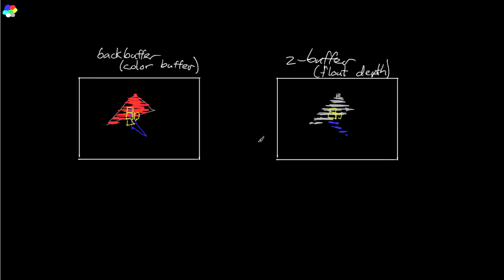That's all there is to it. You use the interpolated Z value to update an array of the depth for each pixel, and use that as a mask to decide whether a pixel will be drawn. This is a special kind of sorting — with drawing we're only interested in the pixel with the lowest depth, and we don't care about the order of anything behind that. We only have to keep track of the current lowest value for any pixel, and that gives us a nice boost in performance.